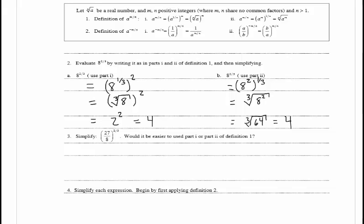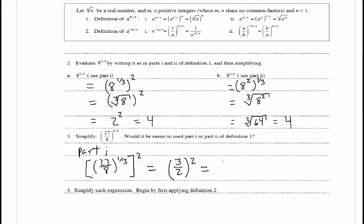In problem 3, simplify 27 over 8 to the 2 thirds. It's easier to use part 1 so we don't have to square 27. Using part 1: take 27 over 8 to the 1 third, then square it. The cube root of 27 is 3 and the cube root of 8 is 2, so we have 3 halves squared, giving us 9 fourths.